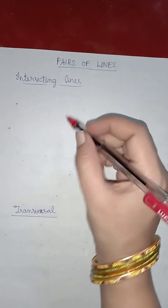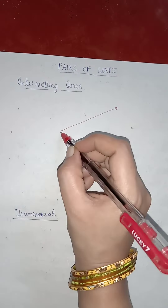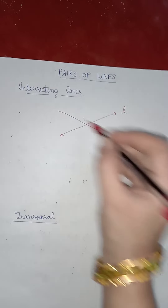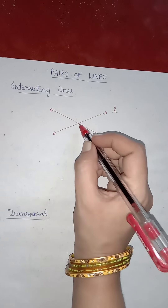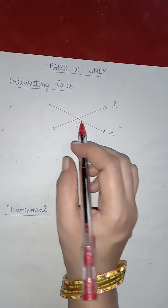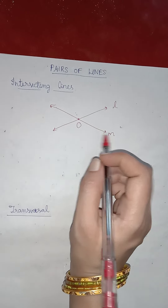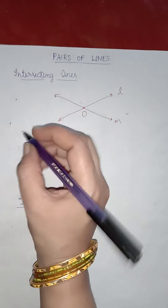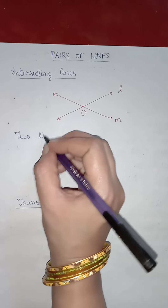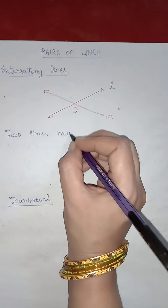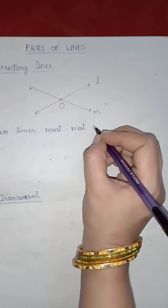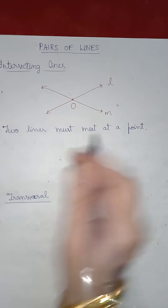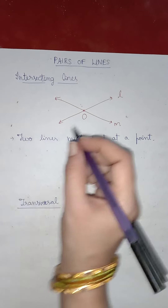Intersecting lines — take two lines, say one line named L and another line named M. If they meet at a point, say O, then these two lines L and M are intersecting lines. The main thing is two lines must meet at a point; then the lines are intersecting lines.